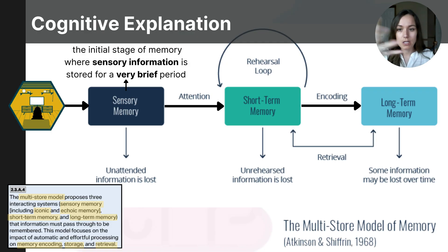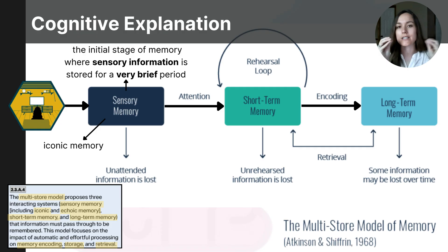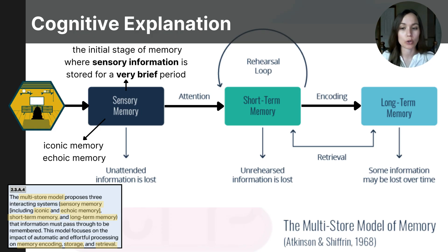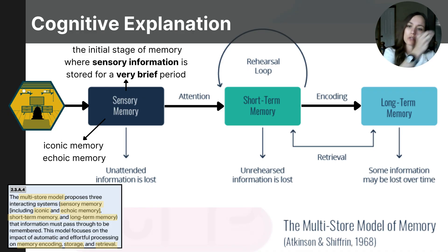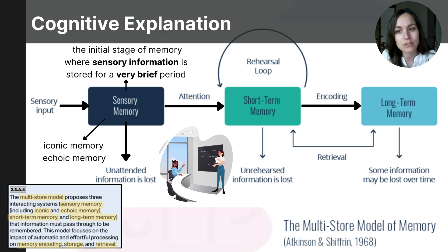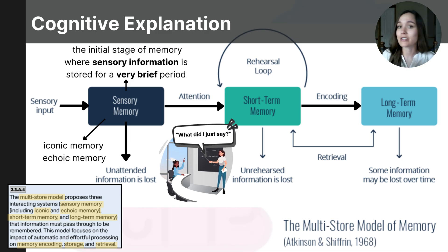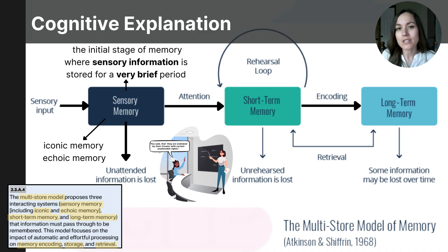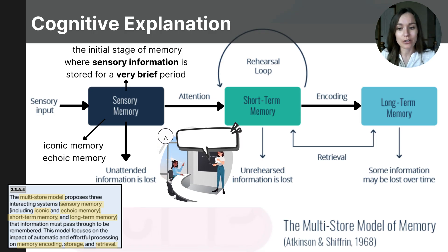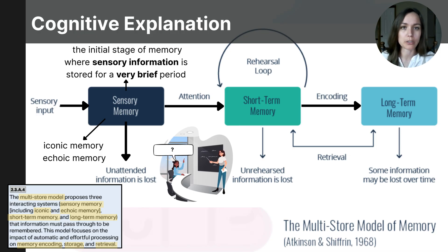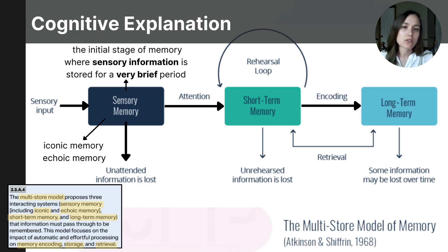The visual information coming into our eyes through sensory memory is called iconic memory — these are momentary memories that enter our eyes and stay for only a few tenths of a second. The auditory information coming into our ears through sensory memory is called echoic memory, and this too is brief. Unless sounds are meaningful enough to move into short-term memory, they are lost within three to four seconds. This is why if a teacher immediately asks a student 'what did I just say?' the student might rattle off the exact sentence word for word, but a few minutes later they probably cannot, because it was only held in sensory memory for a few seconds.